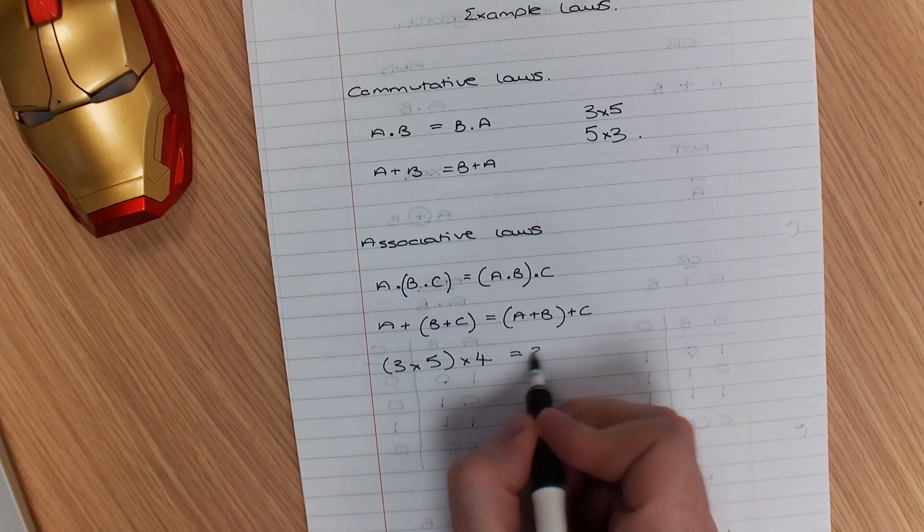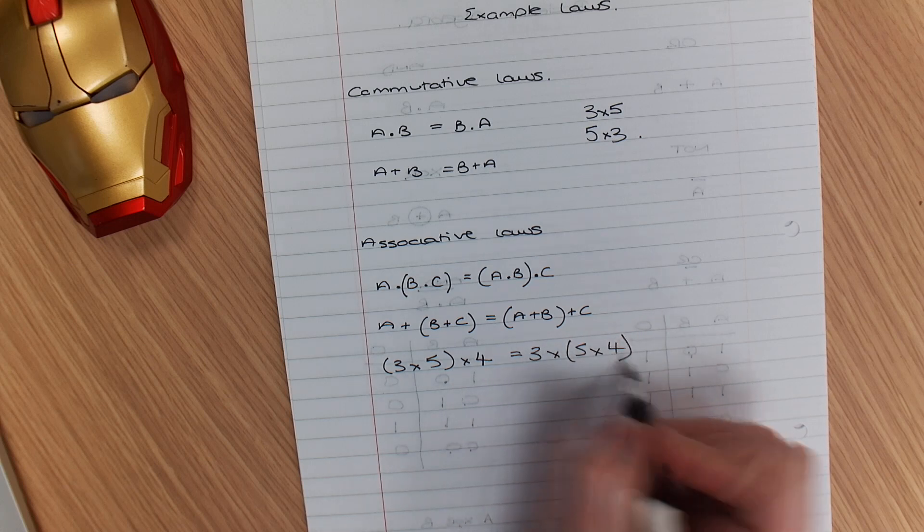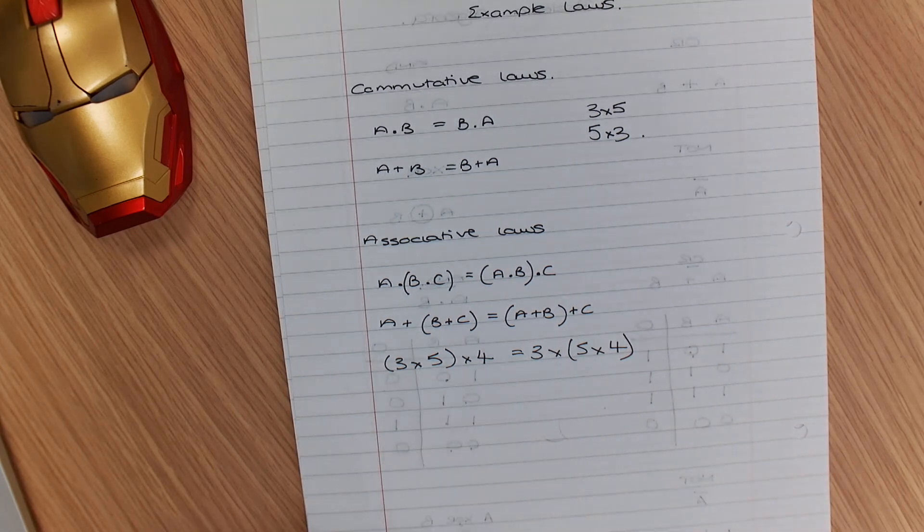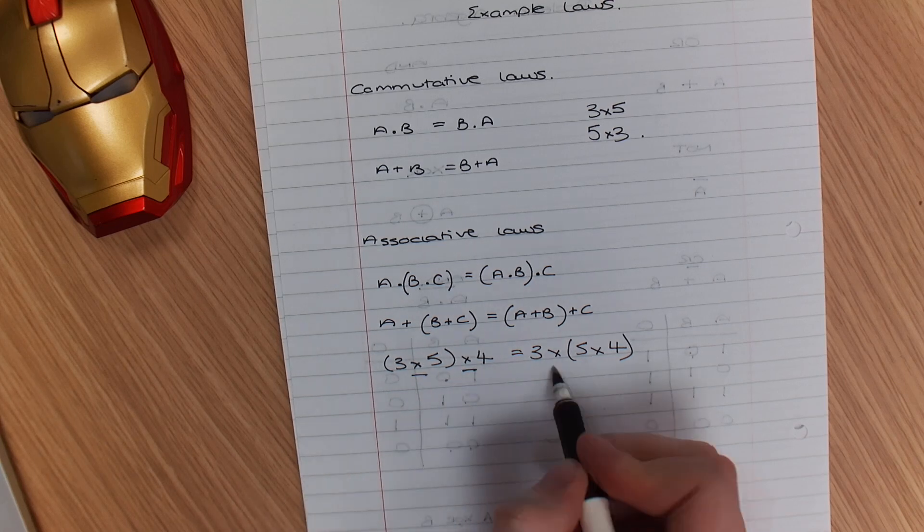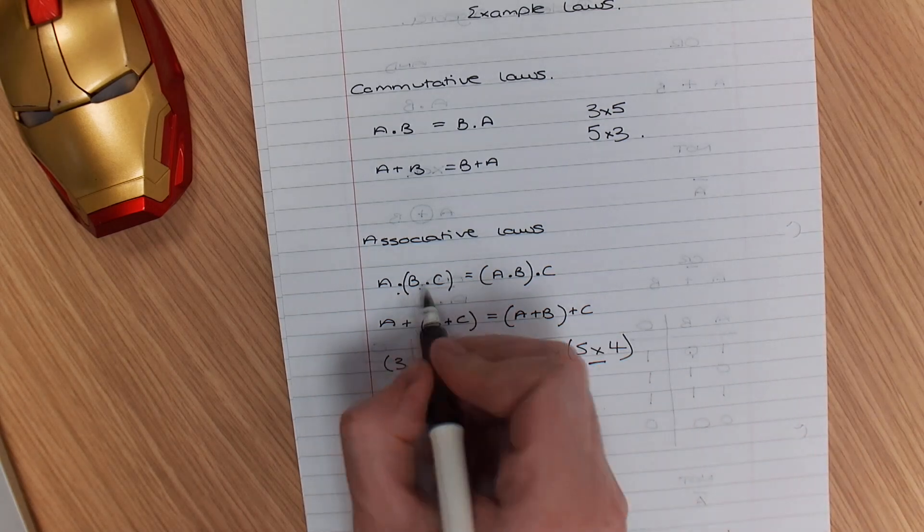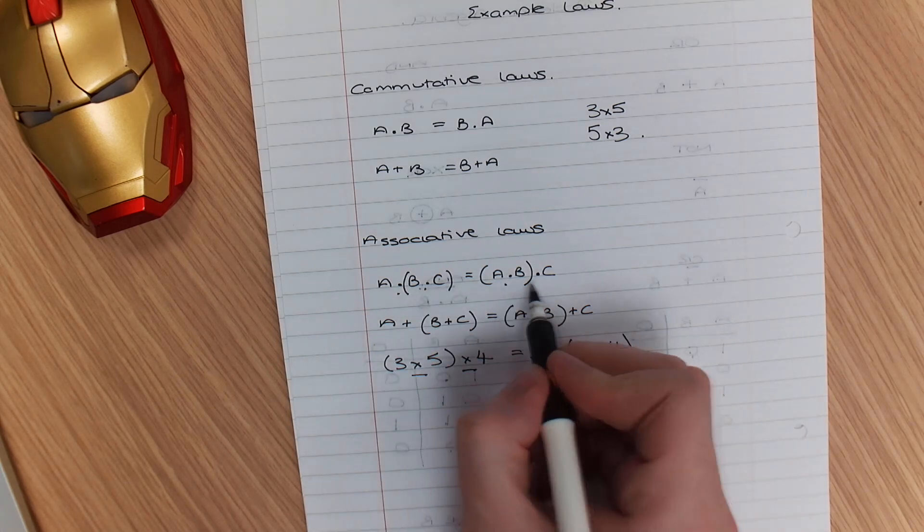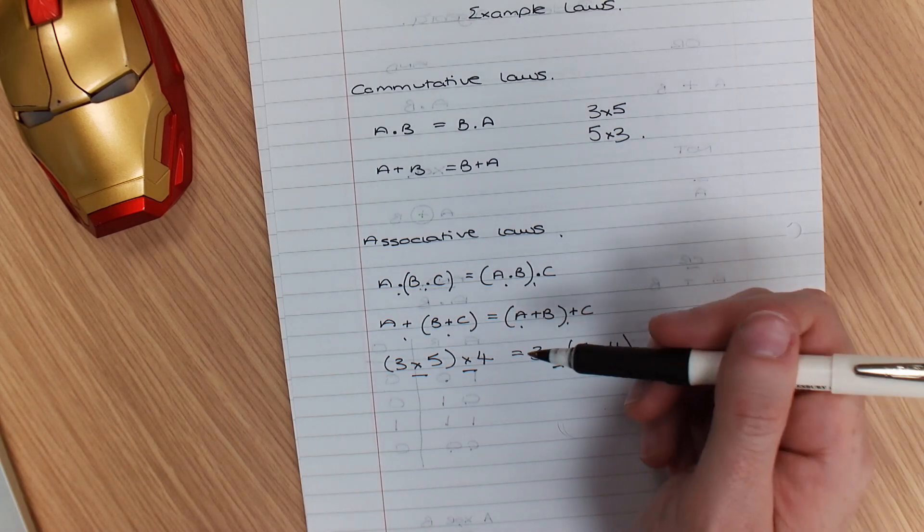If I did 3 times 5 times 4, that's going to give me the same answer. When all the operators are the same, the order does not matter. You can see here, same operator, same operator - therefore the order doesn't matter. If you can remember that law, that is going to help you.